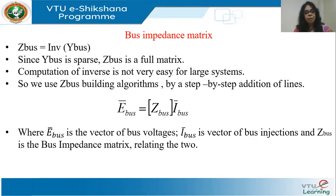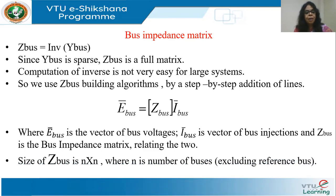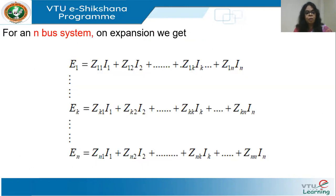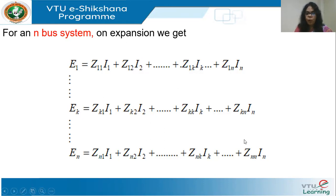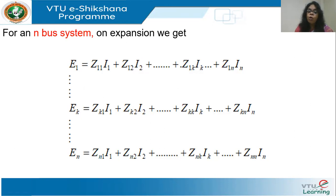E_bus is the vector of bus voltages, I_bus is the vector of bus injections, and Z_bus is the bus impedance matrix relating the two. The size of Z_bus is N×N where N is the number of buses excluding the reference bus. On expansion, we get E1 = Z11·I1 + Z12·I2 + … For any bus K: EK = ZK1·I1 + ZK2·I2 + … + ZKN·IN. The potential of the reference bus is always taken to be zero — just as in nodal analysis in network theory, all voltages are represented with respect to the reference bus.